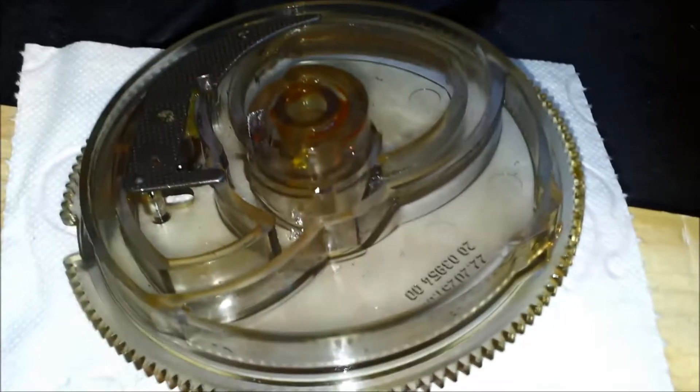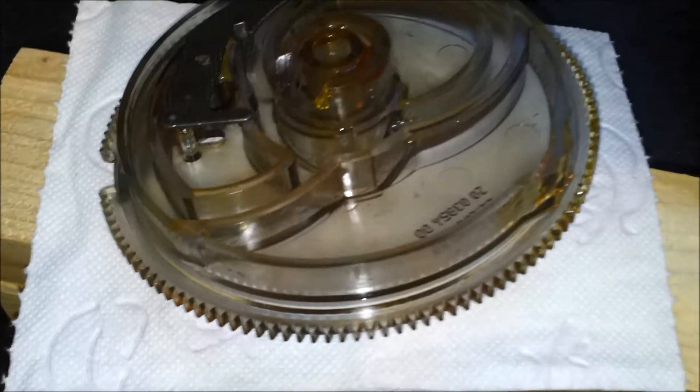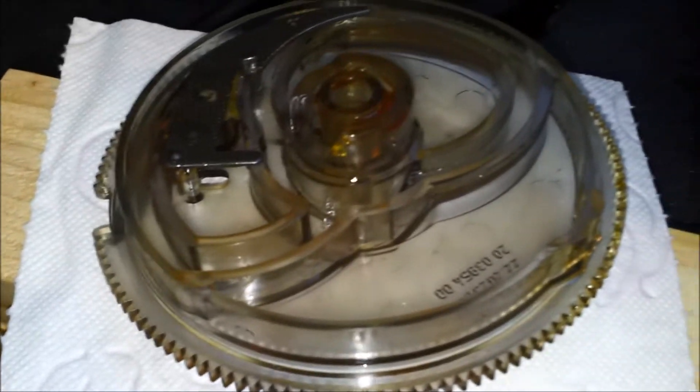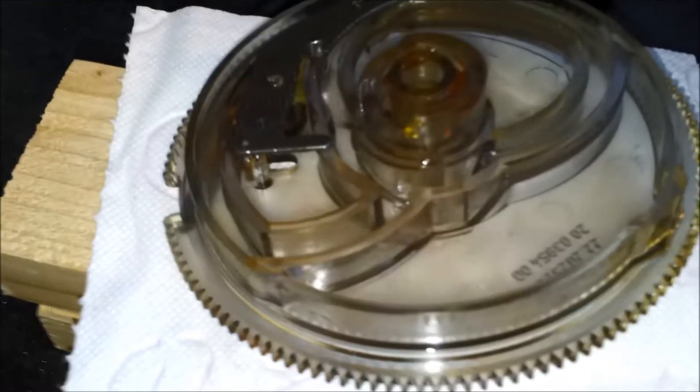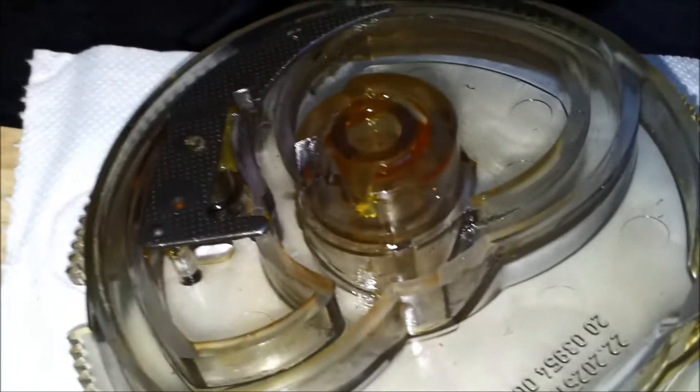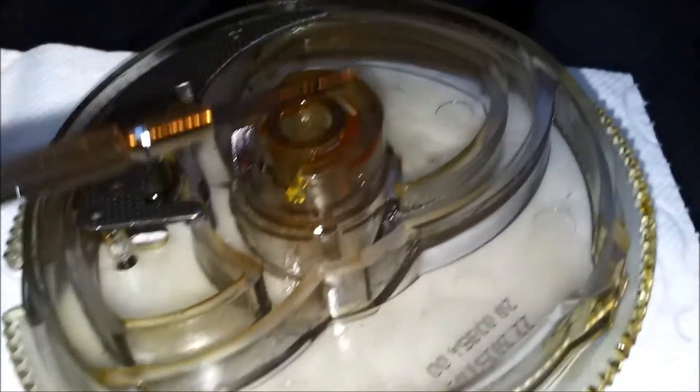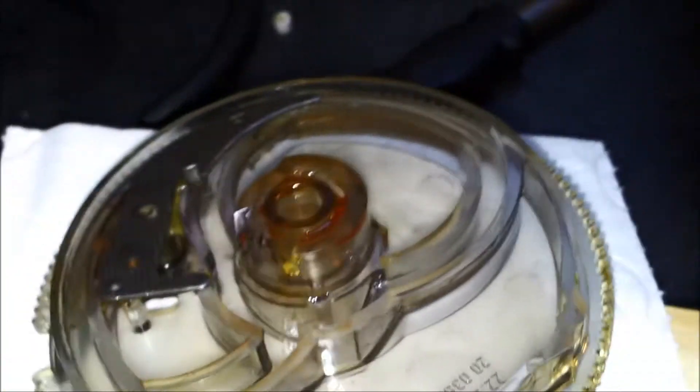So I removed the grease from the cam wheel, at least most of it. There's only one area I couldn't really get into, and that's about here. But I'll just leave it there. And of course this little crevice, I'll just leave that in place.